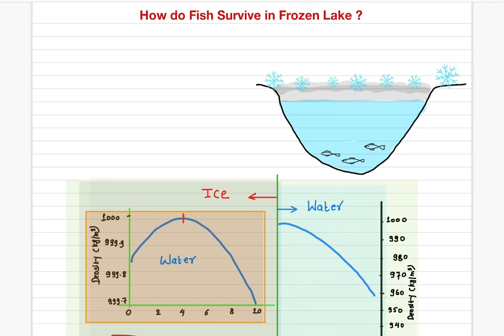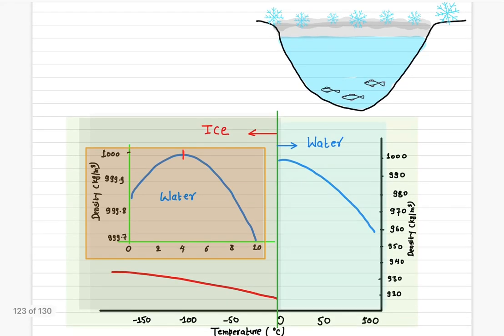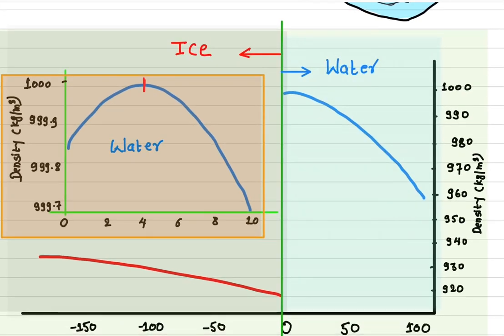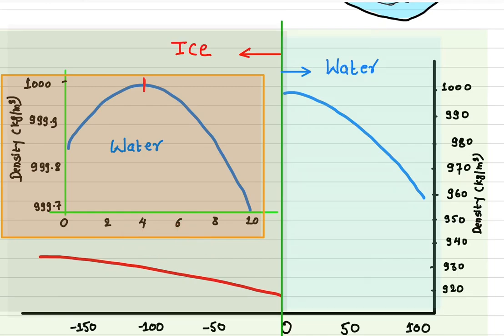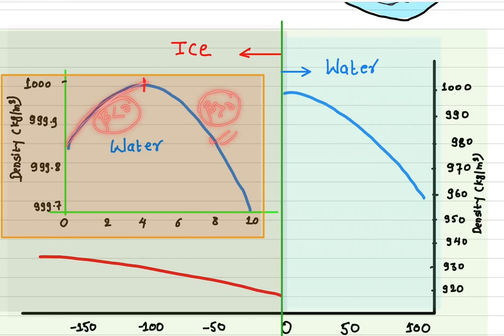Let me explain. If you look at the coefficient of volume expansion of water, it changes between different temperature regimes. From zero to four degrees Celsius, water has a negative coefficient of volume expansion, and a positive coefficient of volume expansion above four degrees Celsius.